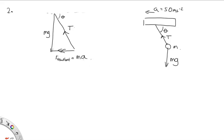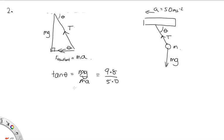We know the acceleration is 5 metres per second squared and we know g. Using the geometry, if this angle is theta, then we can write tan theta equals opposite over adjacent, which is mg over ma. The m's cancel out, giving us 9.8 over 5. Solving this on the calculator, theta is equal to 63 degrees. And so we've solved that problem.